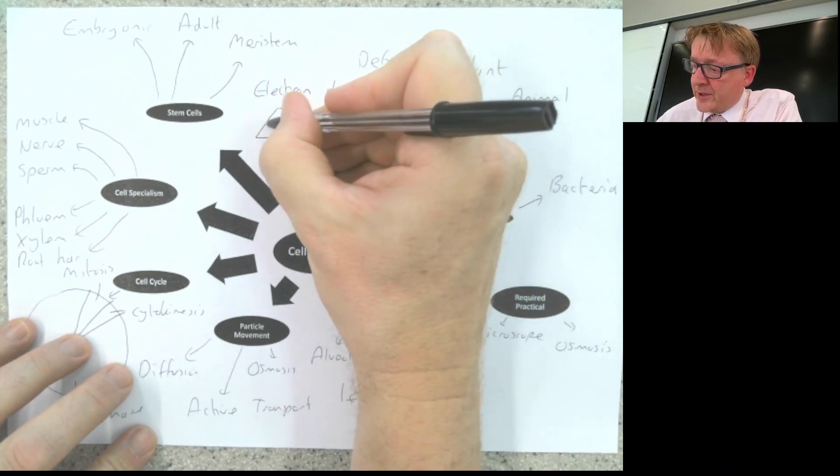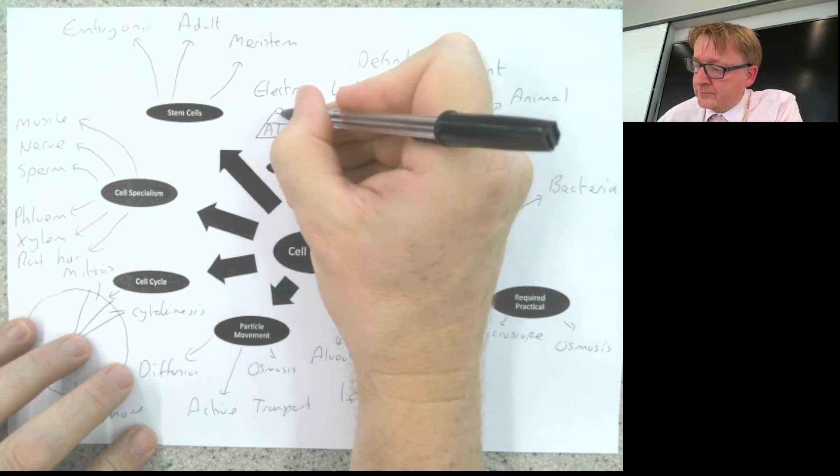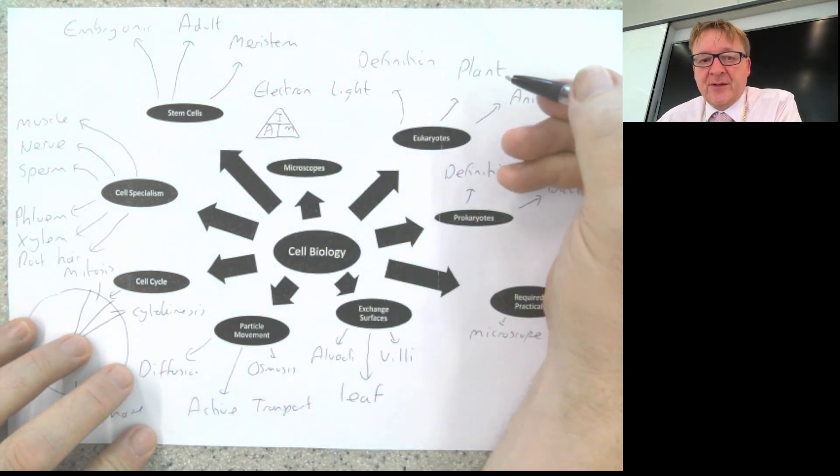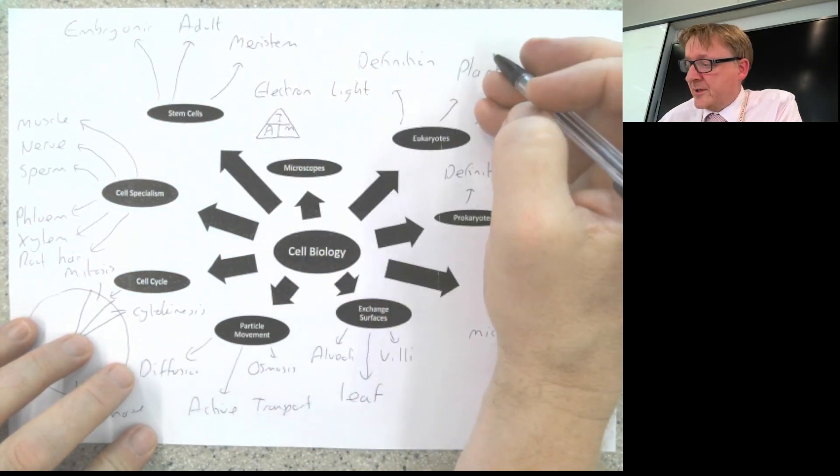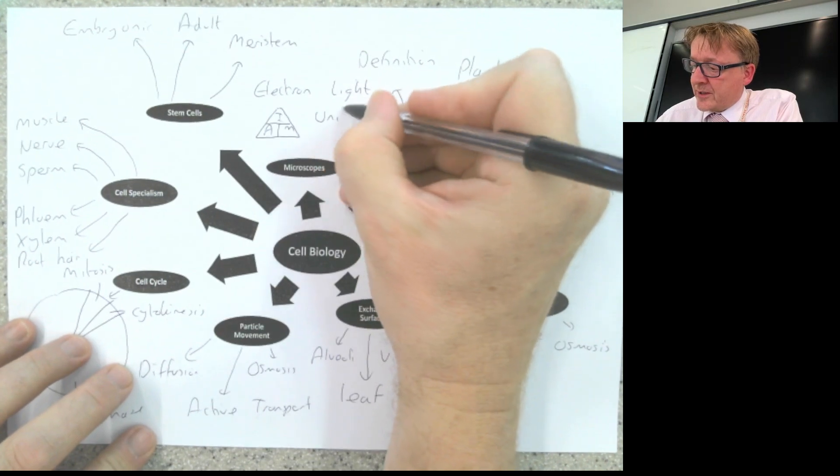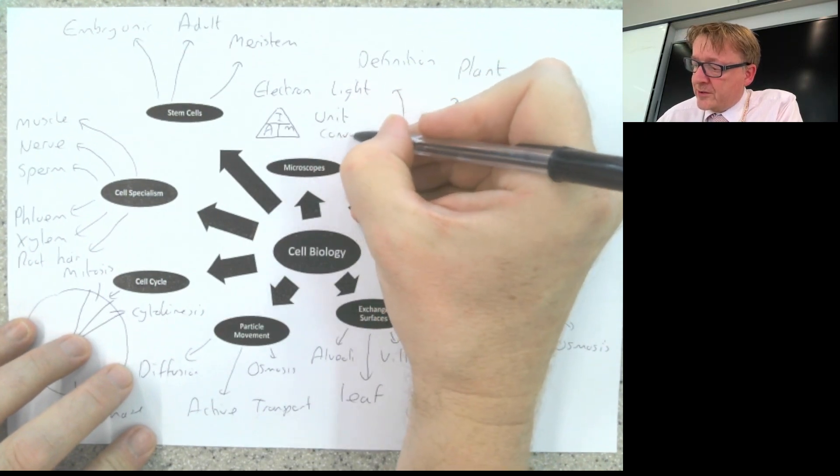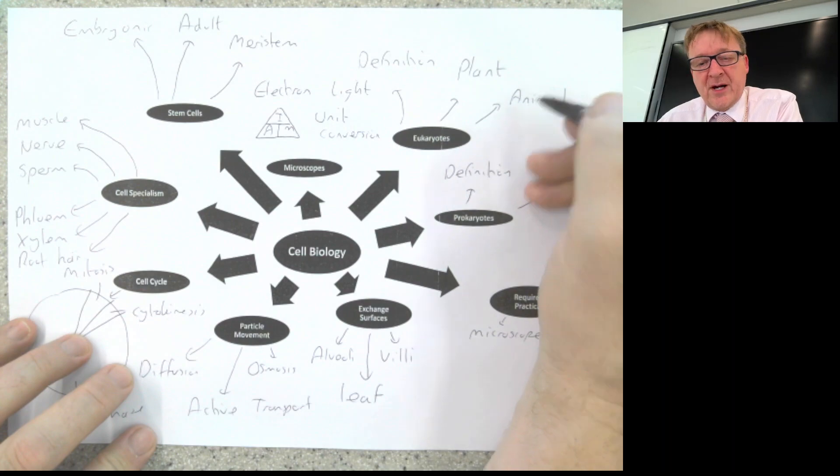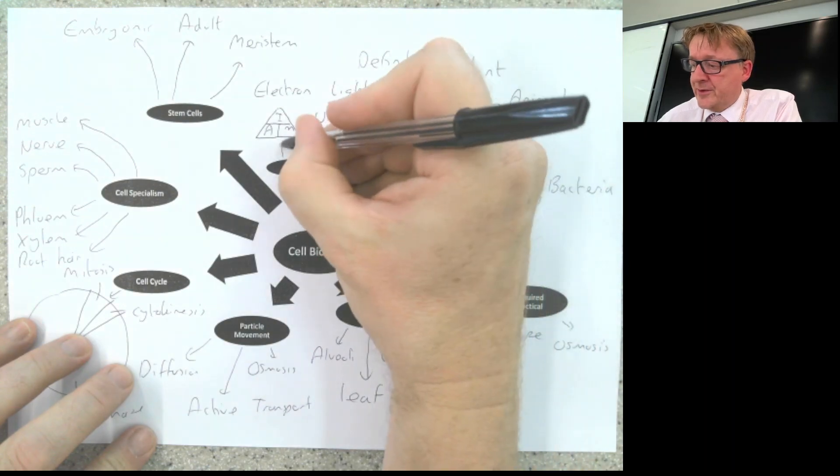You need to know the AIM equation. It comes up a huge amount on exams, and you need to be able to use it. To use that, you need to be able to do unit conversions, where it might be micrometers to macrometers to millimeters to centimeters. You need to know the conversions between each one.